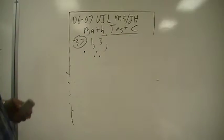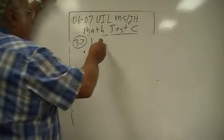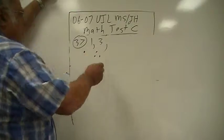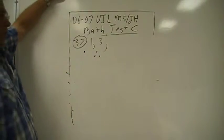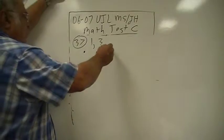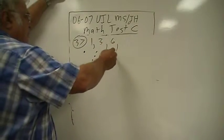Alright, triangular numbers: one, three, six. Trying to see the dot pattern. So the next one would have to have three more dots, so that'd be six. And that's the fourth one.